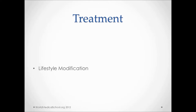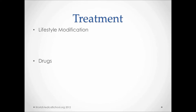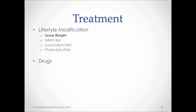Treatment of hypertension involves a combination of lifestyle modification and medications. Weight reduction leads to a maximum decrease in blood pressure, approximately 5 to 20 mmHg per 10 kg of weight loss. DASH — dietary approaches to stop hypertension — involves a diet rich in fruits, vegetables, and low-fat dairy products with low content of saturated and total fats. Reduction of dietary sodium to no more than 2.4 grams per day, regular aerobic exercise such as brisk walking for at least 30 minutes per day, and limiting consumption of alcohol.